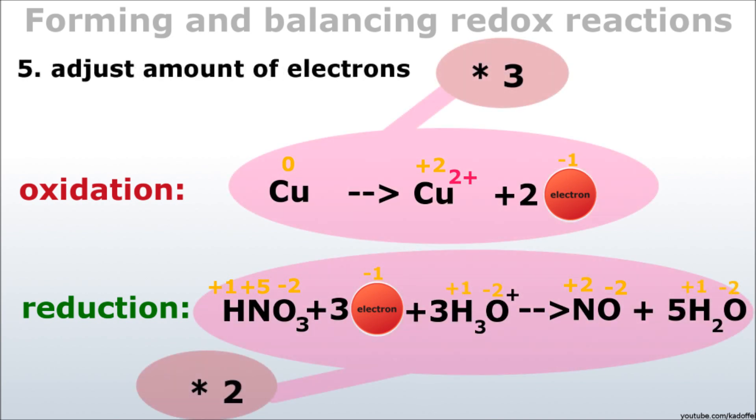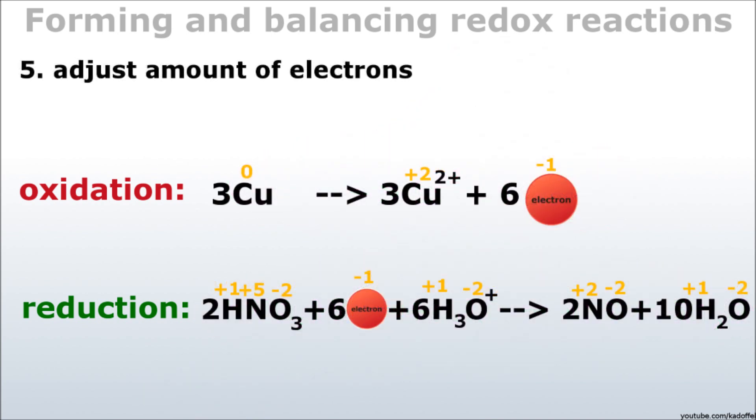Now, in step five, we are going to adjust the amount of electrons in both equations, so we can add them up easily later on. The easiest way to do this is by using the least common multiple, which in this case would be six. So we are going to multiply our oxidation equation by three and our reduction equation by two. As you can see, both equations are now involving six electrons.